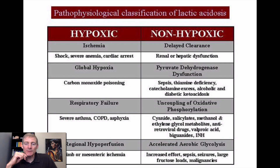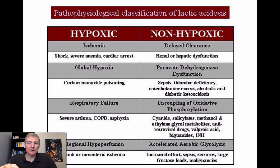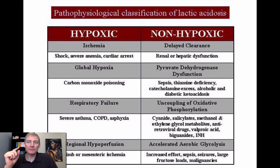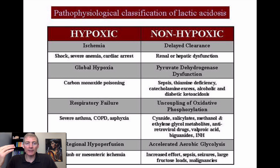This next one I pulled off from online. It's the pathophysiological classification of lactic acidosis. We have hypoxic lactic acidosis and non-hypoxic. This is the mechanism of chronic disease. On the hypoxic left column we have several examples: ischemia — loss of blood flow — severe anemia, cardiac arrest, global hypoxia, carbon monoxide poisoning, respiratory failure, asthma, COPD, asphyxia, and regional hypoperfusion.